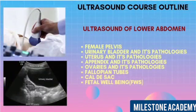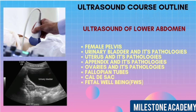In the lower abdomen, we will learn female pelvis, urinary bladder and its pathologies, uterus and its pathologies, appendix and its pathologies, ovaries and its pathologies, ectopic pregnancy, cul-de-sac, fetal well-being, and fetal wellbeing score.